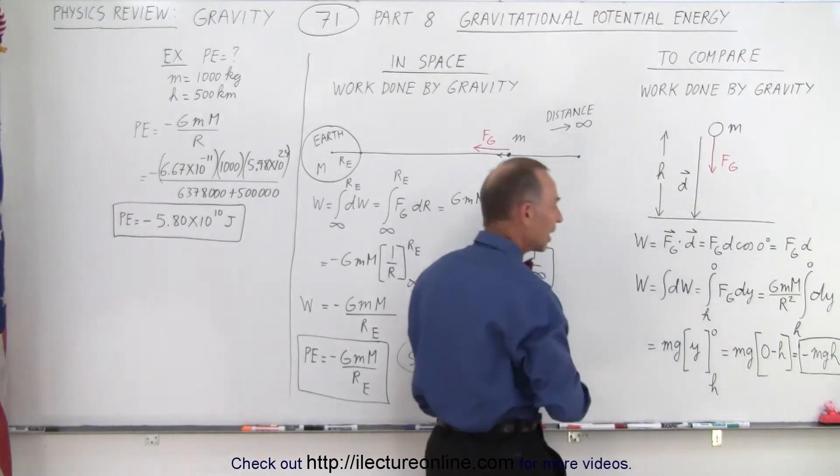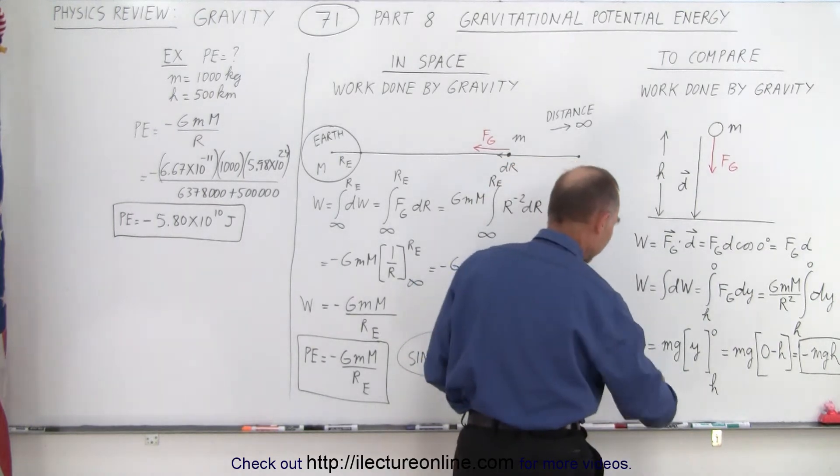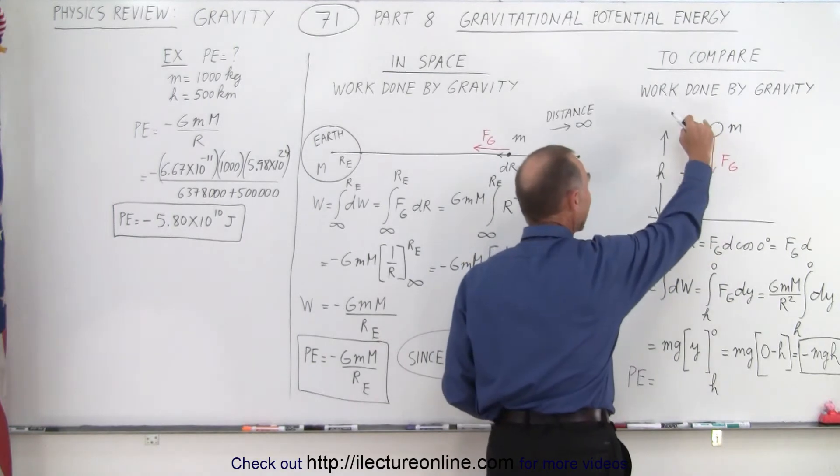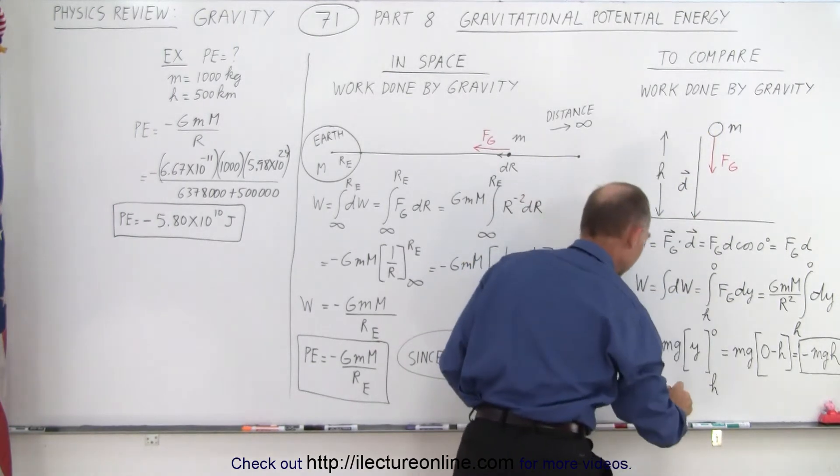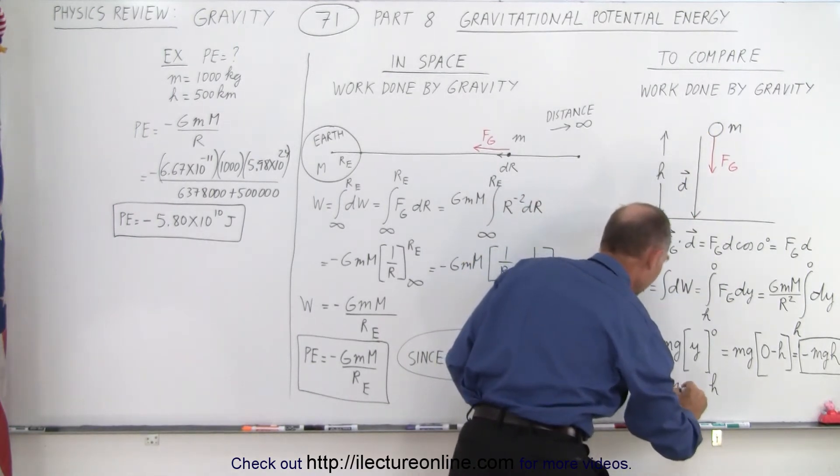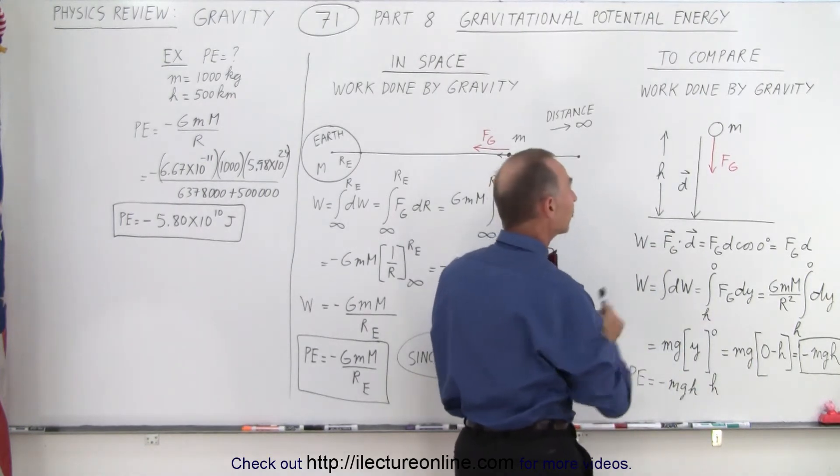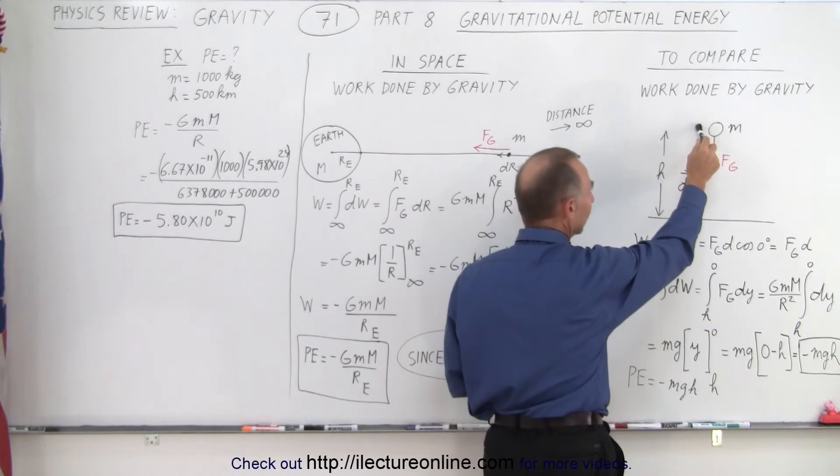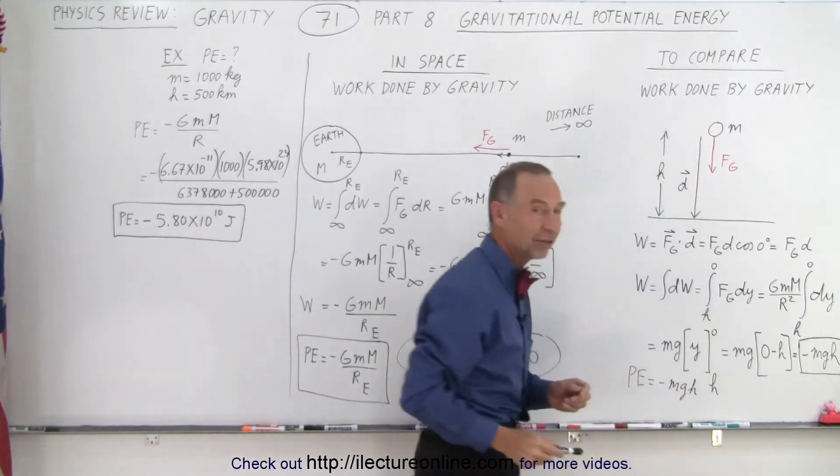So we replace this by mg, and so it simply becomes the work done is minus mgh. And so therefore the potential energy starting at height h and ending up at zero is going to be equal to minus mgh because it's equal to the work done, and that's relative to potential energy being zero at this point, so it's going to be negative after that.